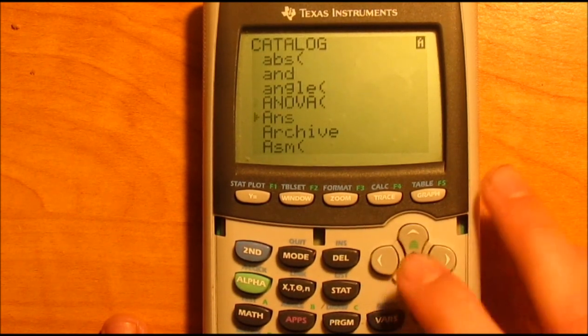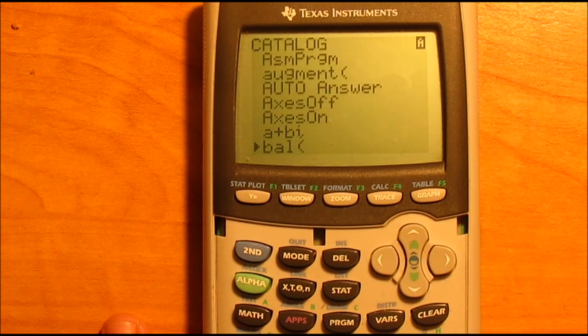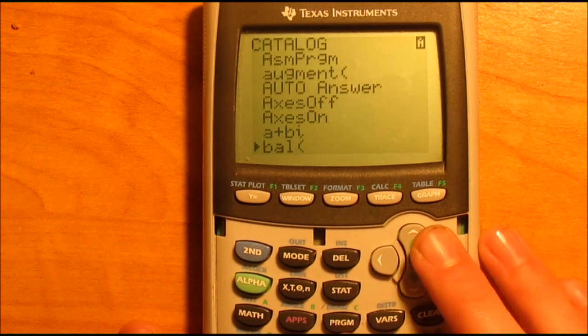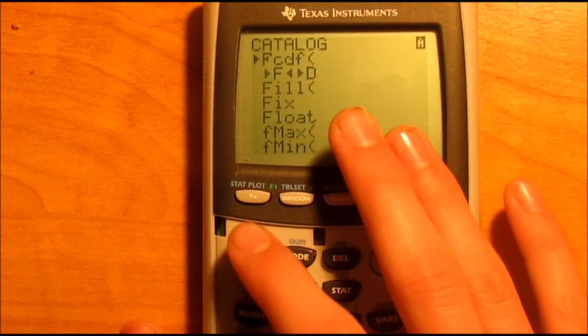Okay, there's your catalog so you can scroll through them, or if you're trying to find something, all the green letters above the keys, you can just type one. So let's see, if we were trying to go to the F's you'd hit cosine and boom it takes you right to the F's. So that's how you find these.